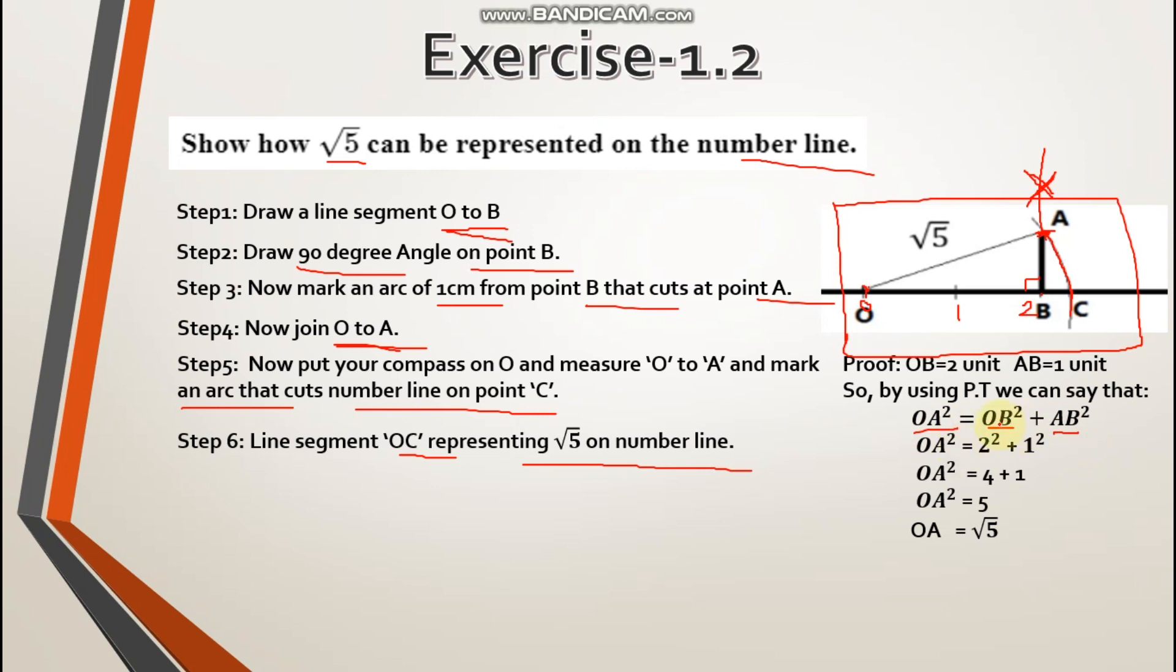We have put values. We know OB was 2 square plus AB whose value was 1. So square of 2 is 4, 1 squared is 1, so 4 plus 1 equals 5. And when we remove the square from here, from right hand side to left hand side, it becomes root. So OA equals root 5.